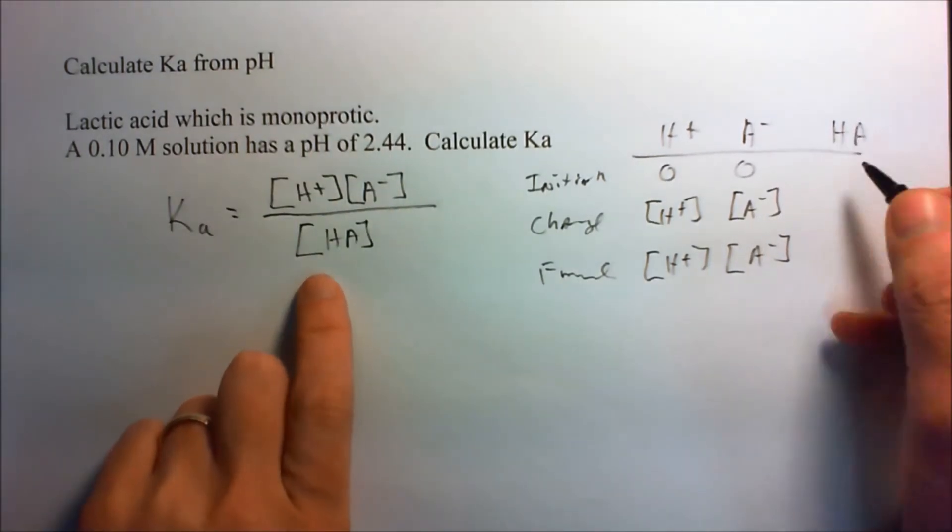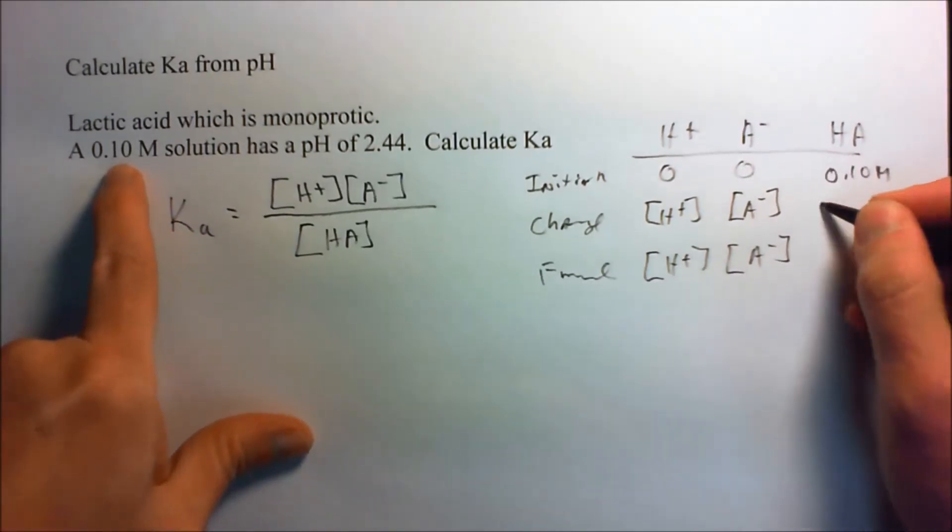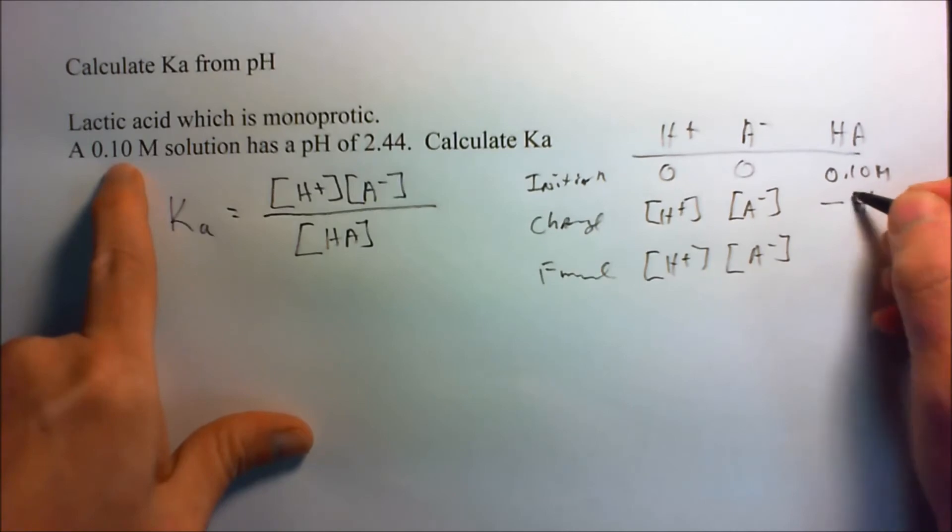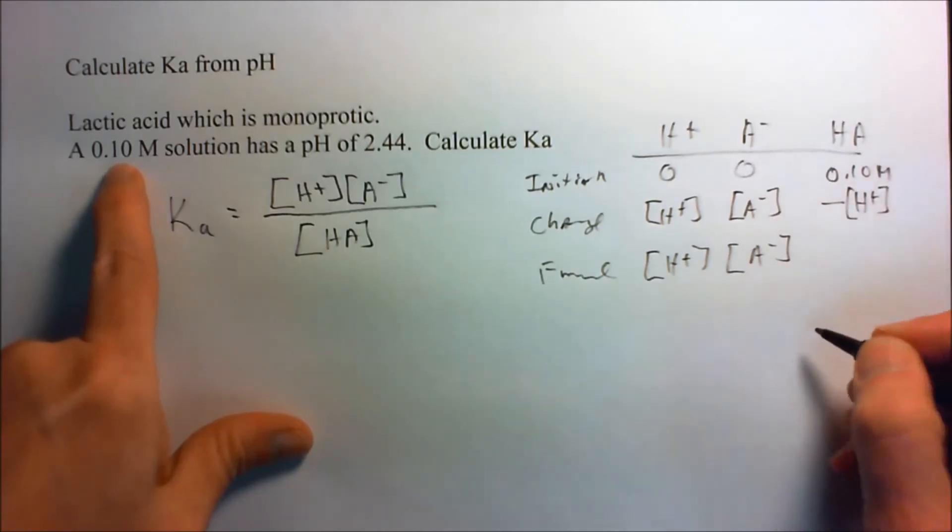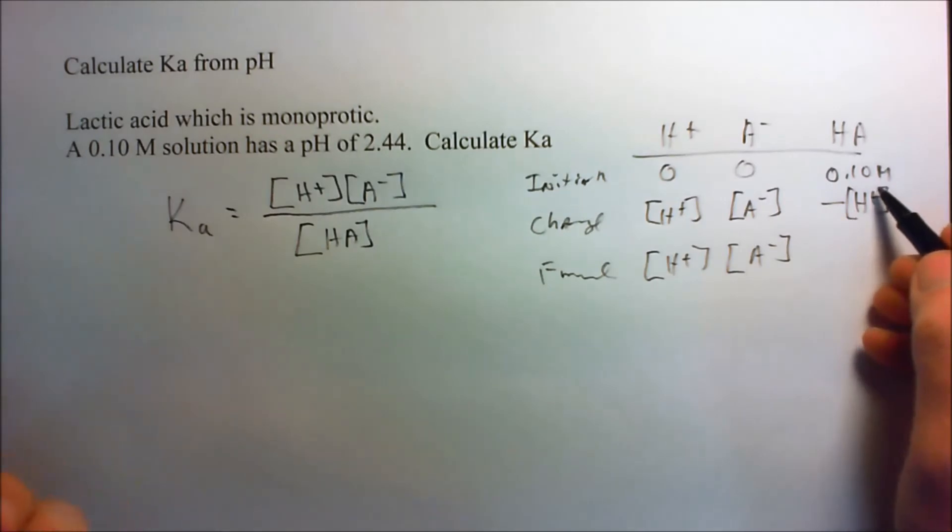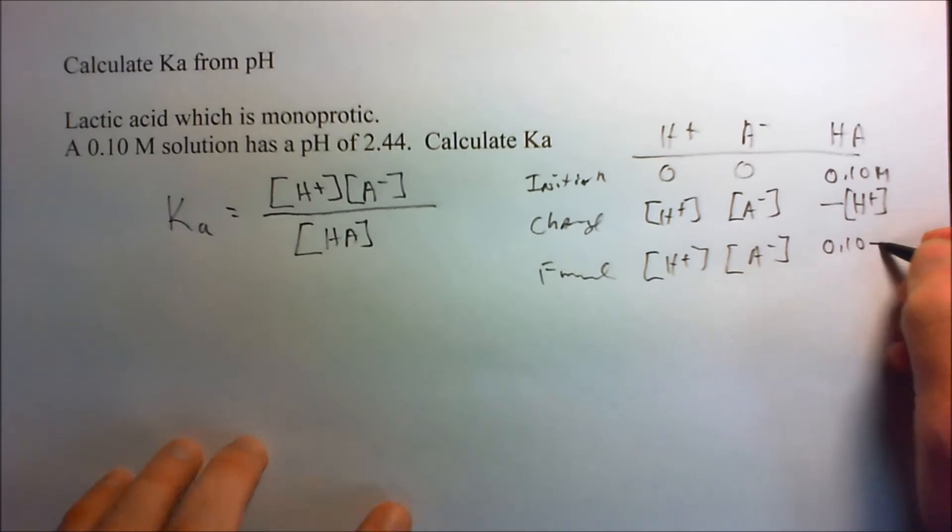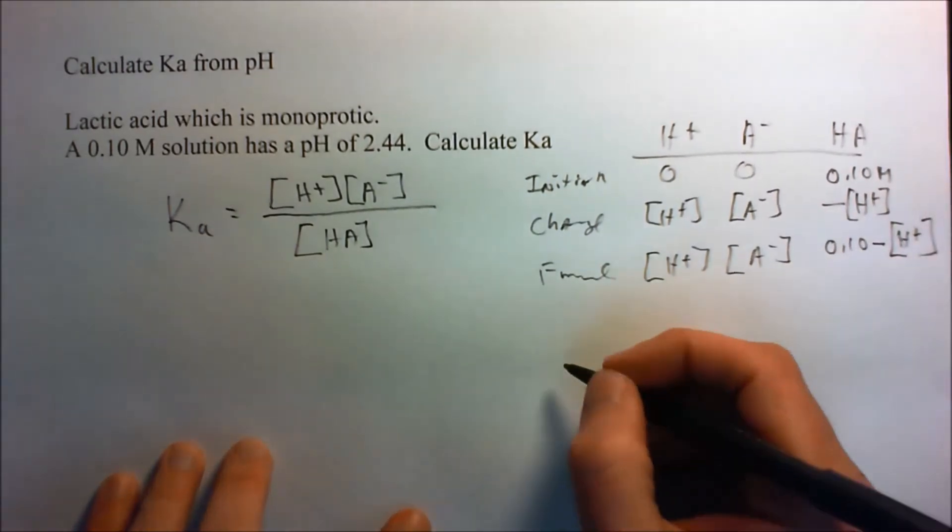Now, the undissociated acid is going to start out at 0.10 molar. It's going to be dissociated partially and lose an amount of concentration equal to the final concentration determined by the pH. And it would be, in fact, 0.1 minus the H plus concentration for the final.